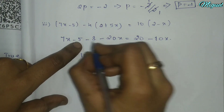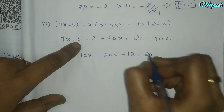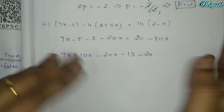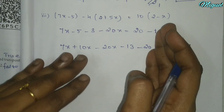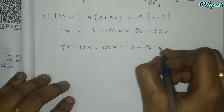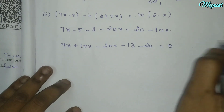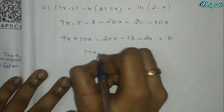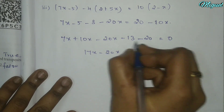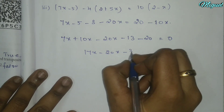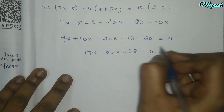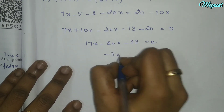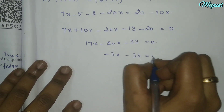So minus 20x. All values equal to 0. 7x equals 10x gives 17x minus 20x. Adding minus 33 equals 0. Separating: minus 3x minus 33 equals 0.